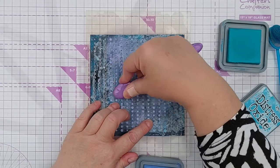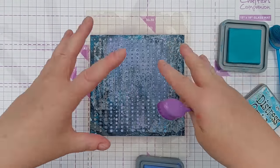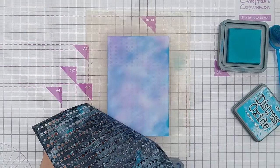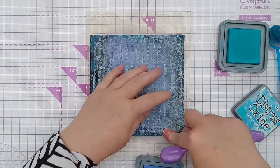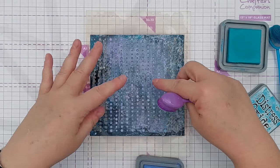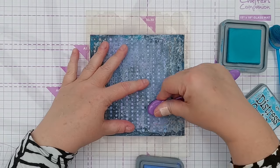To add a bit of visual texture to my background here, I'm putting some Shaded Lilac through this circle stencil. It always reminds me of snow with its different size circles just tumbling down like that.